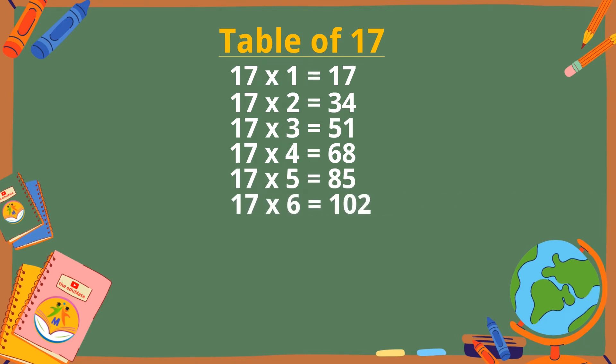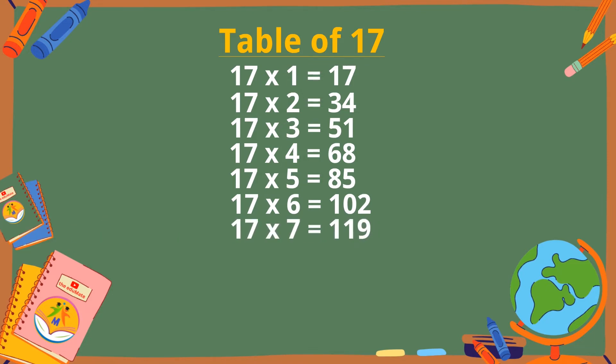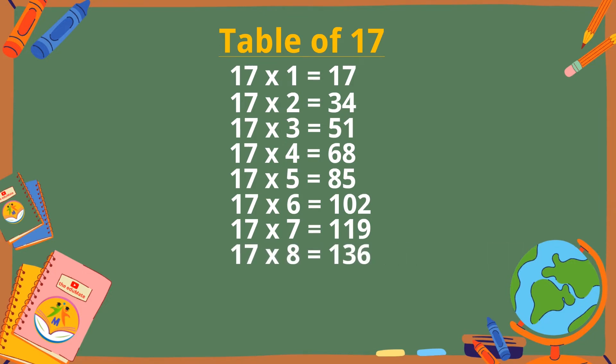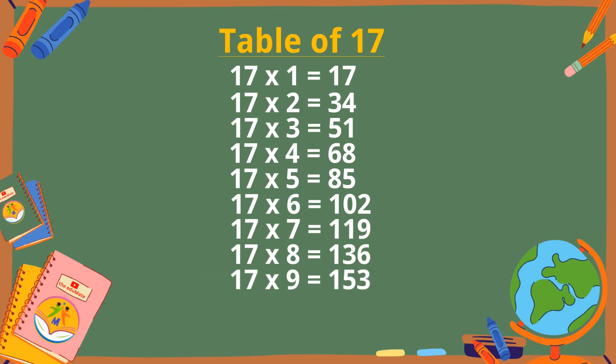17 sevens are 119. 17 eights are 136. 17 nines are 153. 17 tens are 170.